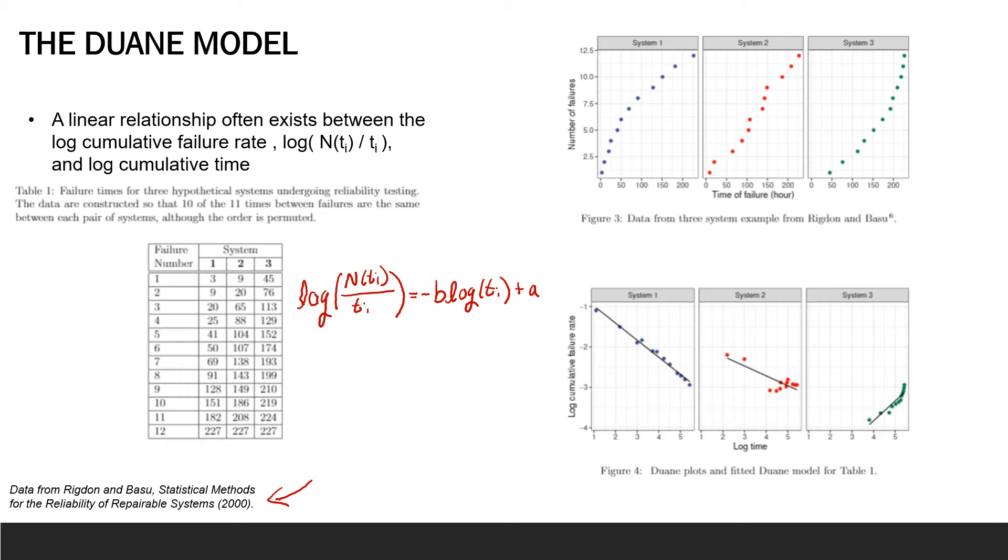And this completes our typical mx + b type formula for a linear relationship. We can look specifically at system one and system three. So system one, we have a negative slope where it's pretty obvious through the downward slope of this black line that Duane's formula formed. The negative slope of the plot for system one is indicating reliability growth. And the positive slope, so this increasing black line for system three, is indicating reliability degradation.